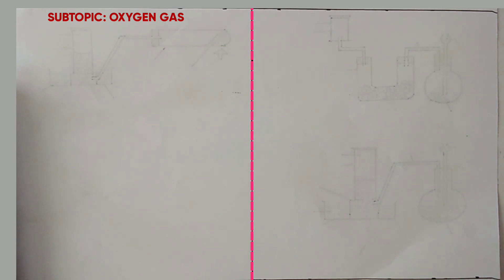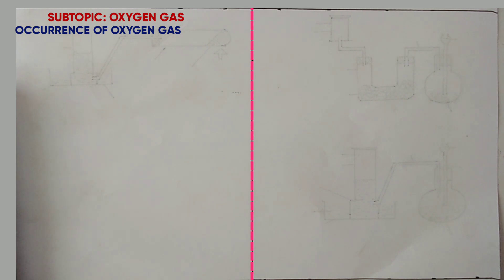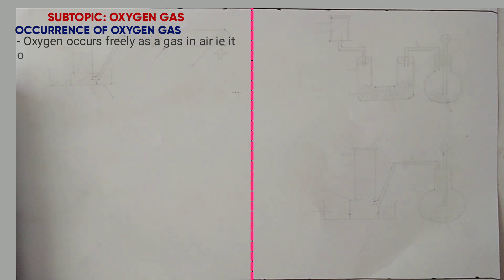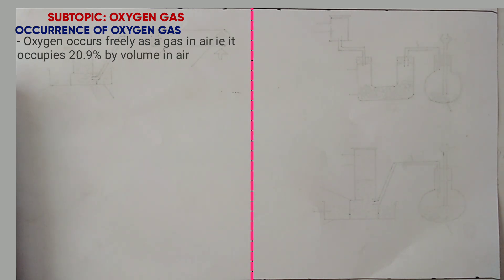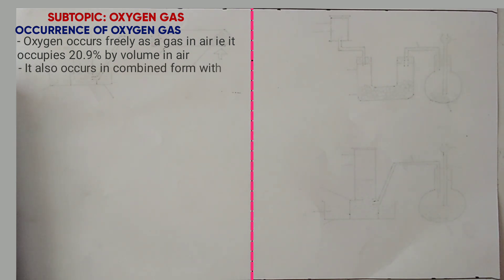First of all, we will begin by looking at the occurrence of oxygen. Oxygen occurs freely as a gas in air and occupies 20.9% by volume of air in the atmosphere. It also occurs in combined form with other elements, for example, hydrogen in water.